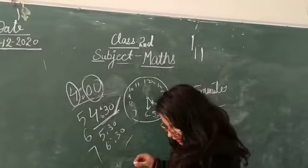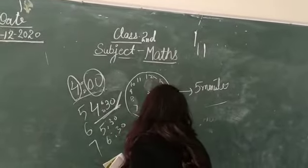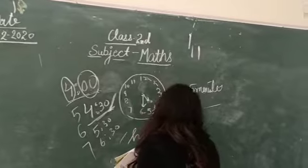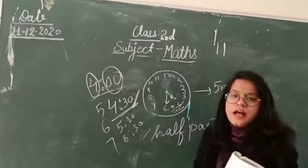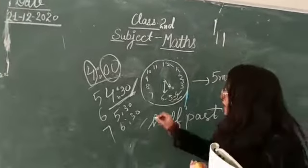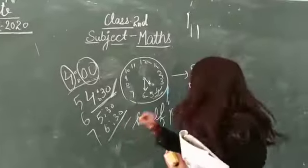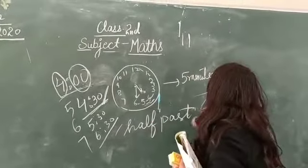What do we learn? Half past. So when the minute hand is on 6, it is half past the hour. For example, 6:30 is half past 6.